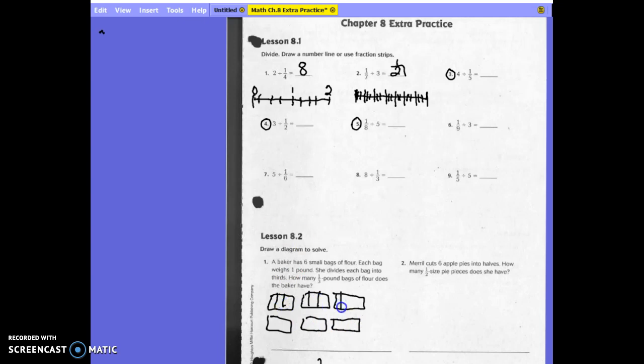She's redrawing this diagram. How many 1 third pound bags does she have? 18. Notice I put a hyphen in here. 1 third pound bags.